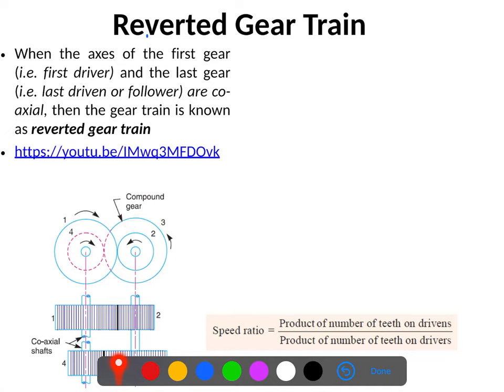The reverted gear train is a special type of compound gear train. To find the speed ratio for the reverted gear train, we define the following variables.